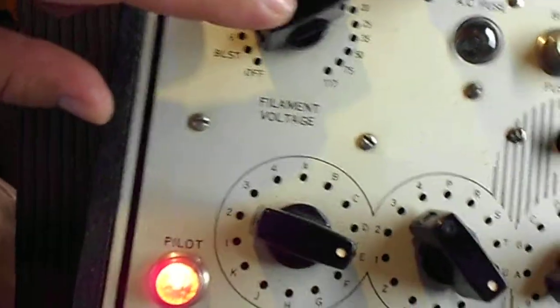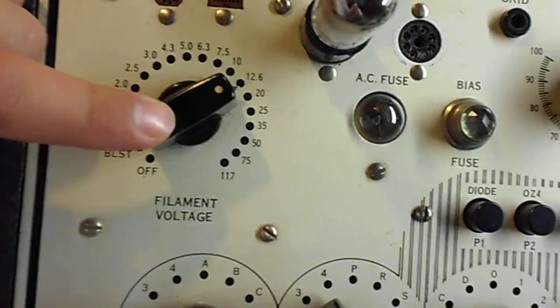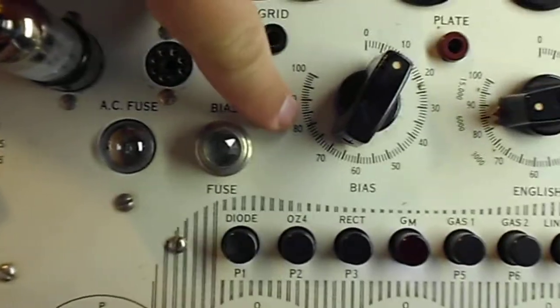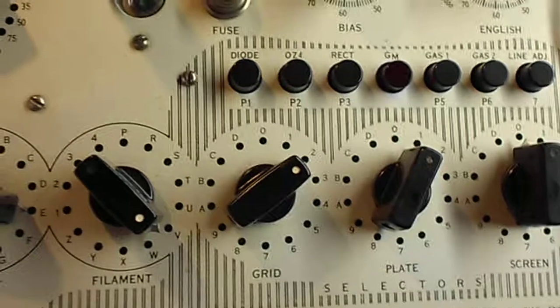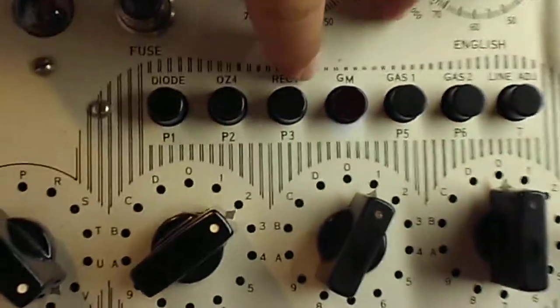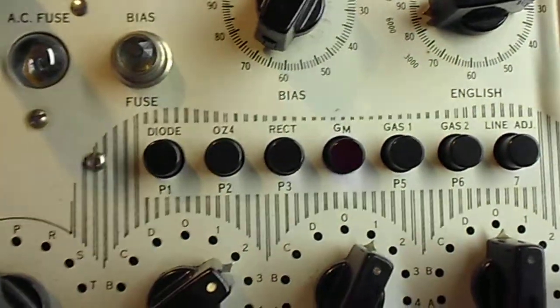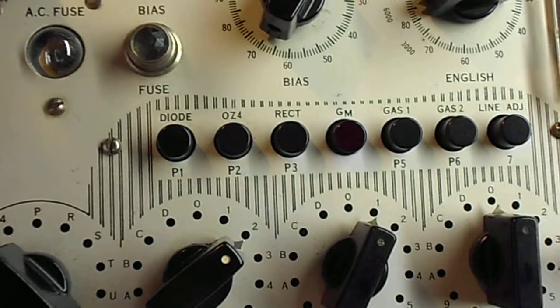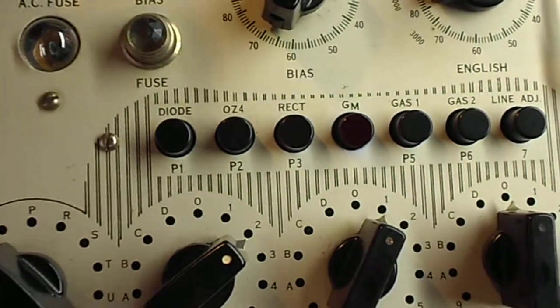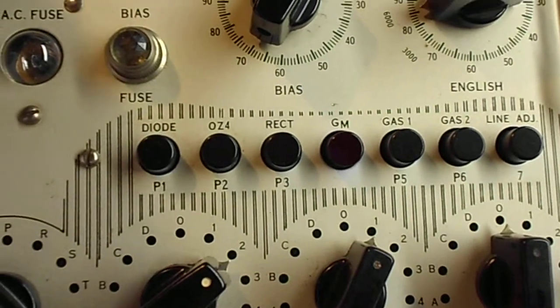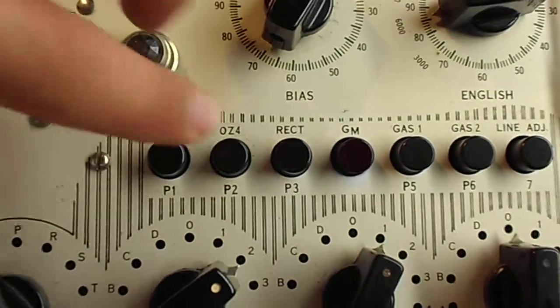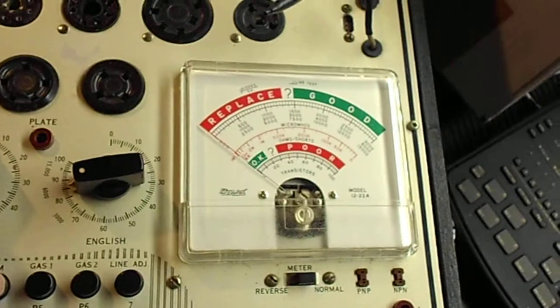And there's a filament voltage of 12.6, bias 10, English 86, so on. The abbreviation for mutual conductance is G-sub-M. So once we have all the switches set to the right settings and the tube's warmed up, which it is because it's been on for a few minutes, you press down on G-sub-M and you take your reading.